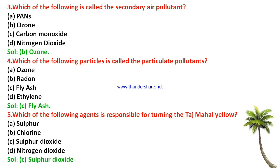Which of the following is called the secondary air pollutant — PAN, ozone, carbon monoxide, or nitrogen dioxide? The right answer is ozone. Which of the following particles is called the particulate pollutant — ozone, radon, fly ash, or ethylene? The right answer is fly ash. Which agent is responsible for turning the Taj Mahal yellow — sulfur, chlorine, sulfur dioxide, or nitrogen oxide? The correct answer is sulfur dioxide, the only gas responsible for turning the Taj Mahal from white to yellow.